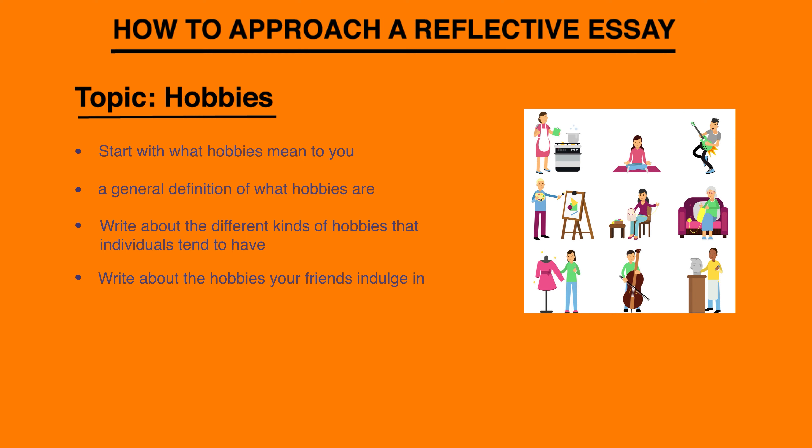The next paragraph can be about how these hobbies evolve as per the different stages of an individual's life. Because what you liked to do when you were five years old is very different from what you probably like to do now. So, how those hobbies change depending upon the stages of an individual's life and the age the individual is — how does that change over time?